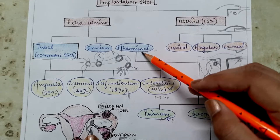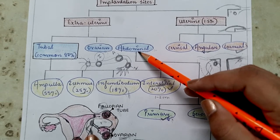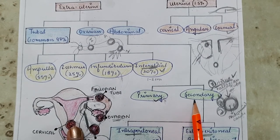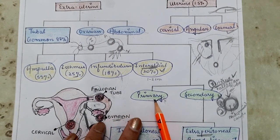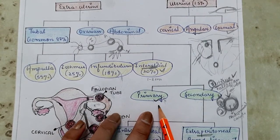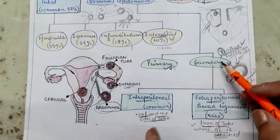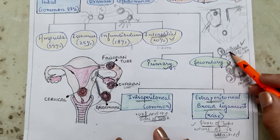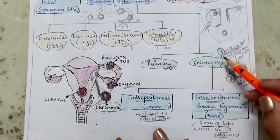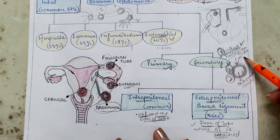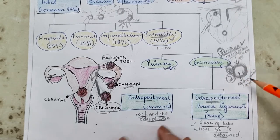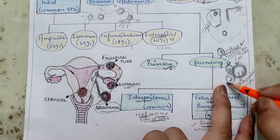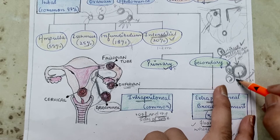The third type under extra-uterine pregnancy is abdominal pregnancy, where the fertilized ovum implants inside the abdominal cavity. There are two subtypes: primary abdominal pregnancy, where the first site of implantation is the abdominal cavity, and secondary abdominal pregnancy, where the primary site is either the uterus or fallopian tubes and the conceptus then escapes into the abdominal cavity.